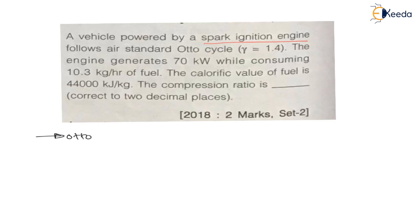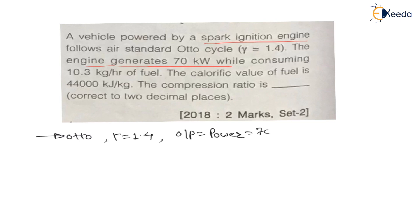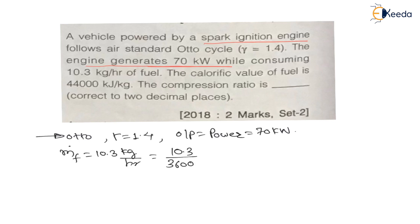Gamma is equal to 1.4, meaning the ratio of specific heats, or adiabatic index, is 1.4. The next line states the engine generates 70 kilowatts while consuming 10.3 kg per hour of fuel. The engine generates means this is the power output from the engine, which is 70 kilowatts. The mass flow rate of fuel is 10.3 kg per hour, which converts to 10.3 divided by 3600 kg per second.